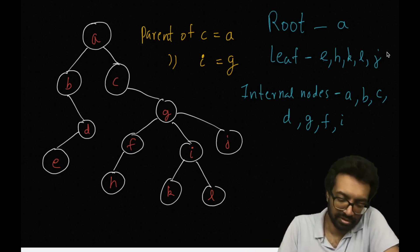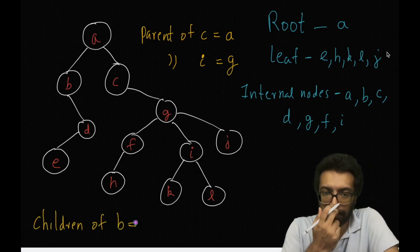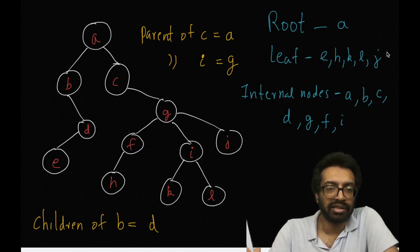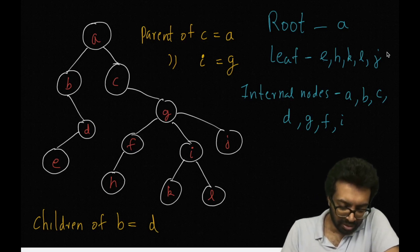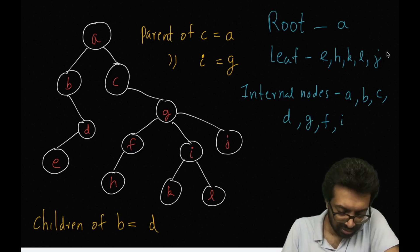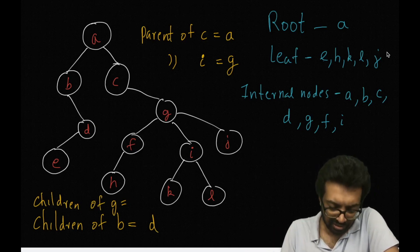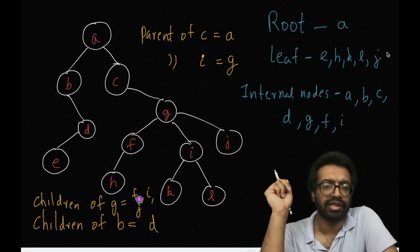Children of B: B has exactly one child, D. What about children of G? The children of G are F, I, and J.